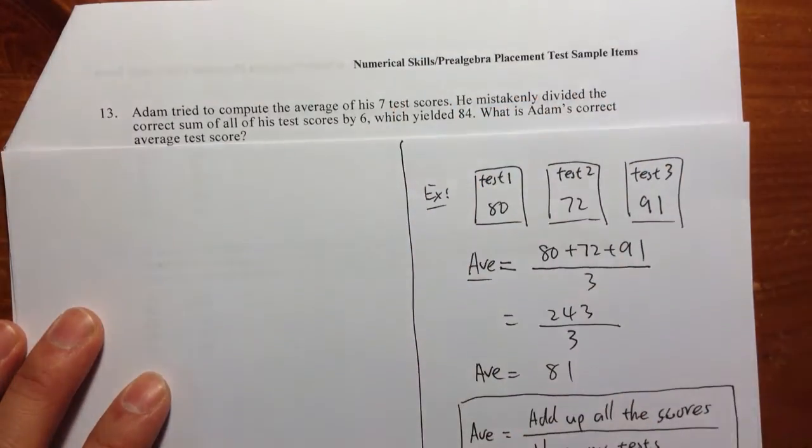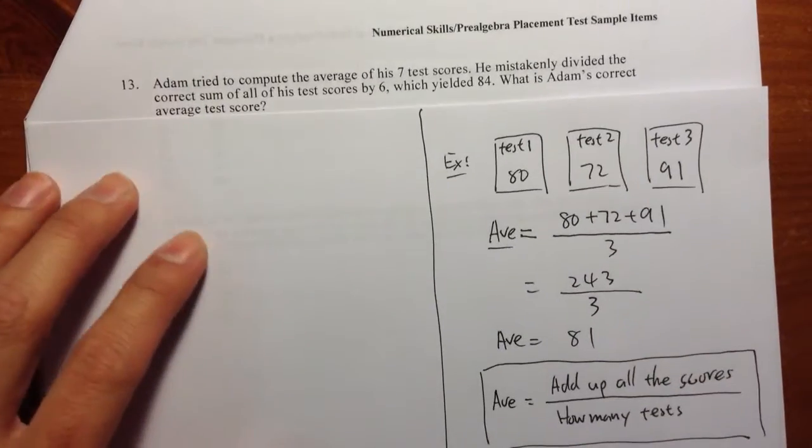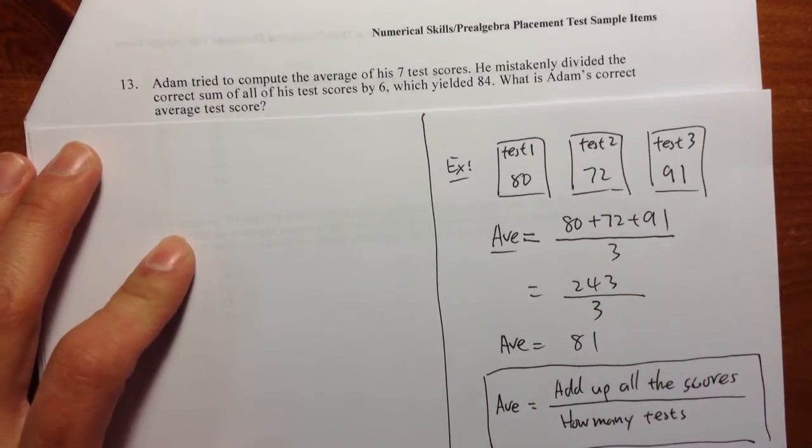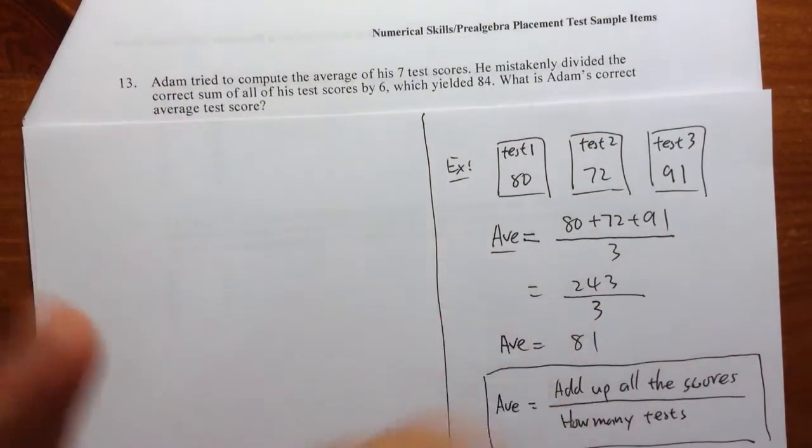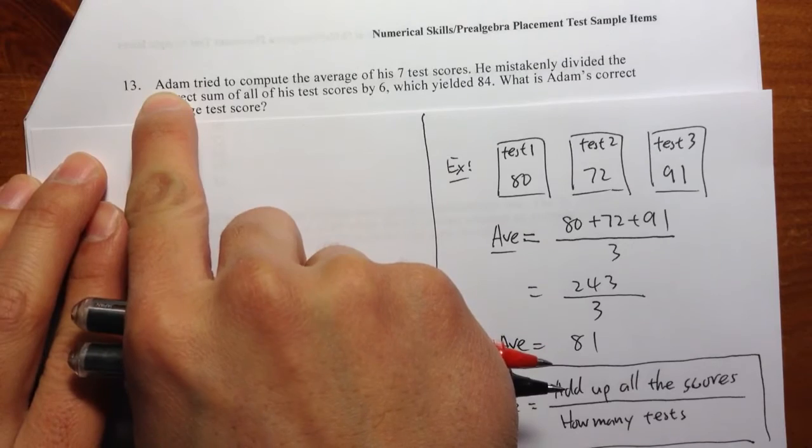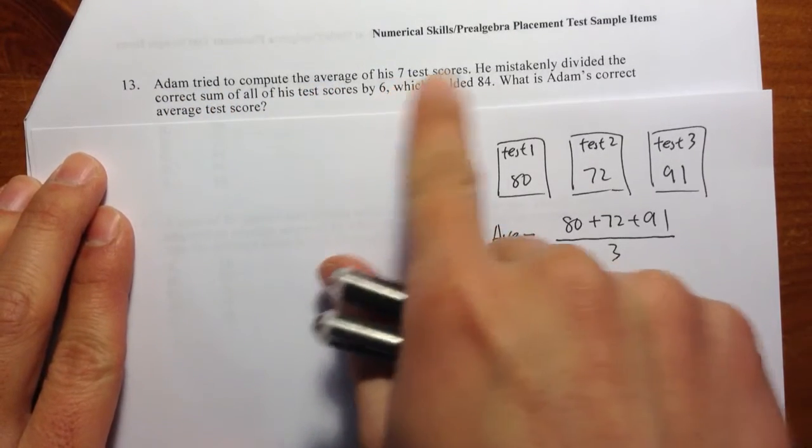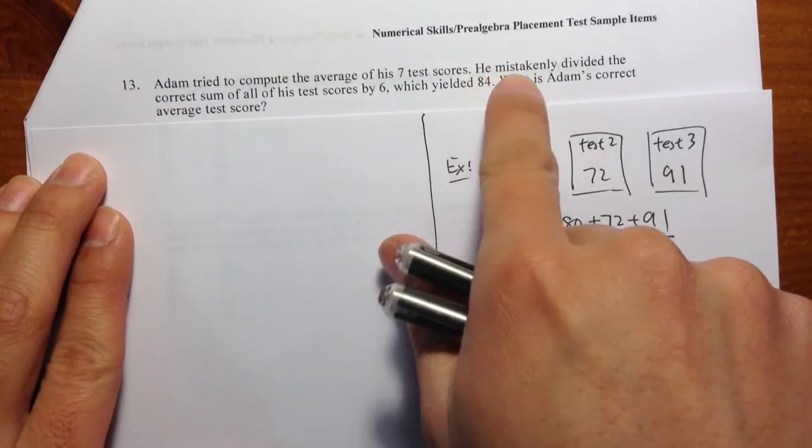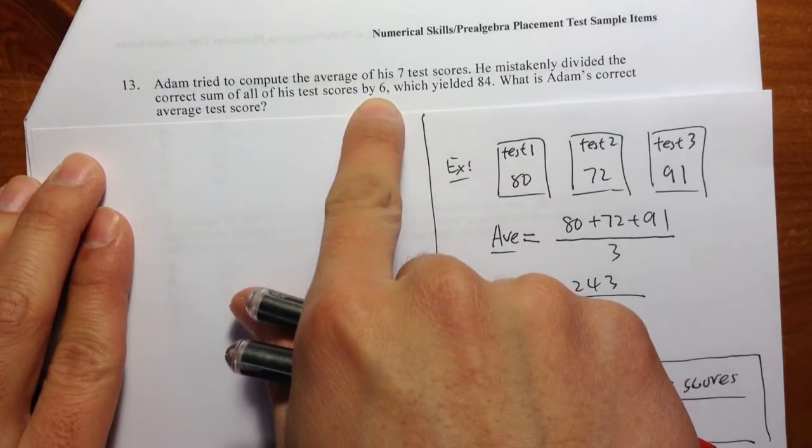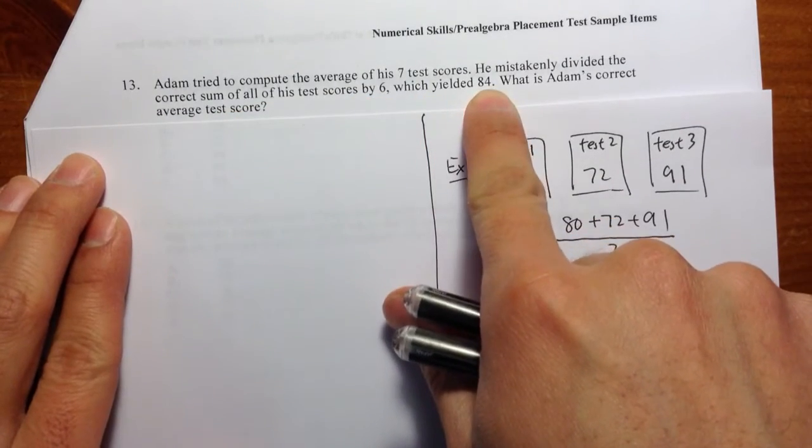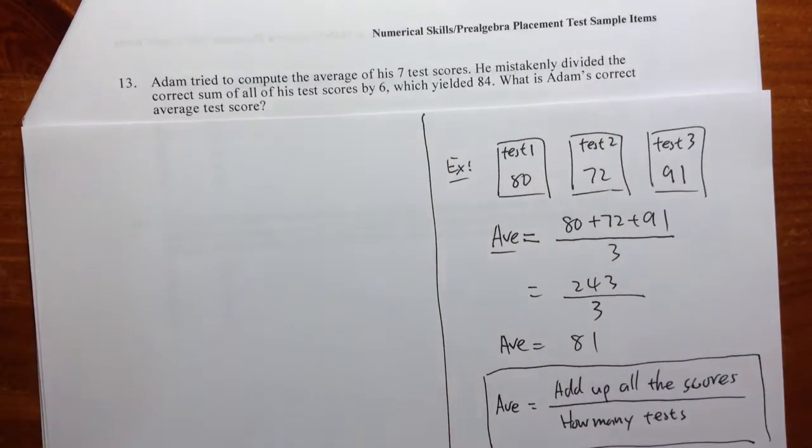So let's take a look at question number 13, and we are going to use this idea. But question number 13 asks the question in a different way. Pay attention to the wording. He says Adam tried to compute his average of seven tests, but he mistakenly divided the number by 6, which yielded 84. And we are trying to figure out what was his correct average test score.